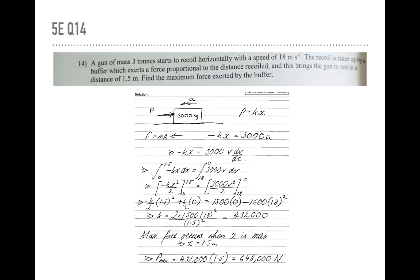Okay, you'd integrate it. You get a constant of integration. And you'd work your way through it. Make a substitution and you get a k value there of 432,000. And then the last part is find the maximum force exerted by the buffer. So remember that the force is proportional to the displacement. Largest displacement is 1.5. So multiply the k value by 1.5 to get the maximum force.